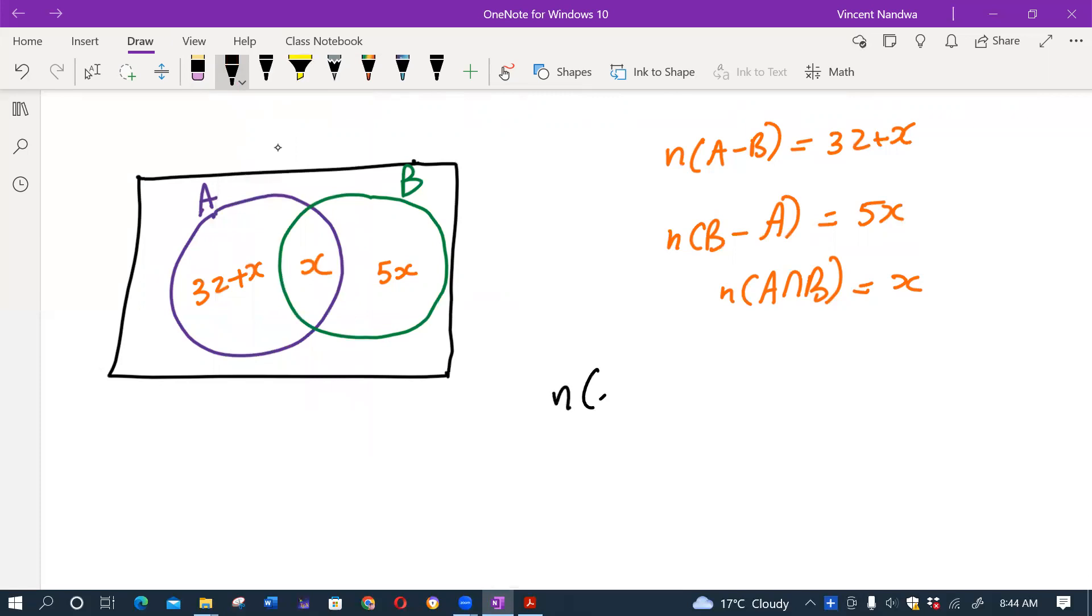I've been told that if cardinality of A is the same as cardinality of B, find x. Now cardinality of A in this diagram would be given by 32 plus x plus x, which would be 32 plus 2x. Cardinality of B from this diagram would be x plus 5x, which is the same as 6x.